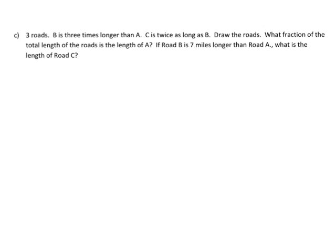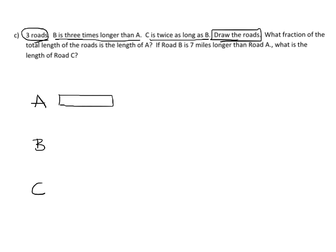On our last slide for this video, we're told we have three roads and we're told that B is three times longer than A, C is twice as long as B, and then we're supposed to draw the roads. Let's start there. So we have three roads A, B, and C, so I'm going to label this A, B, and C and I'm going to begin with all three tapes being the exact same length. I'm going to draw all three of those identically.